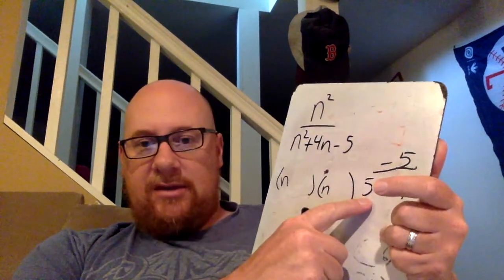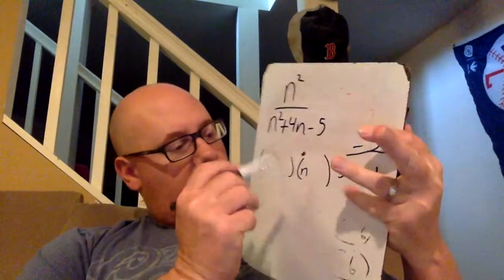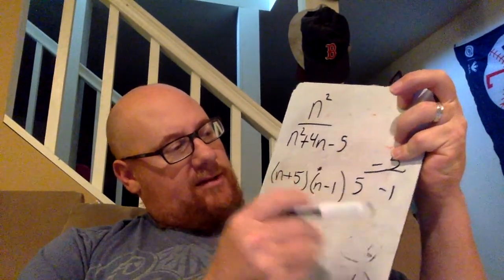And we know that these two terms, oops, sorry, my finger's in the way. These two terms are going to be my second term. So we're going to say plus five minus one.